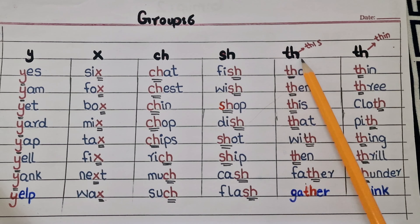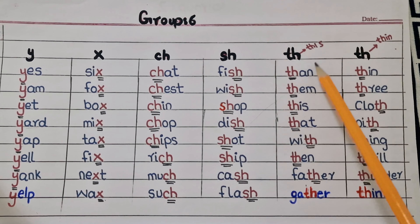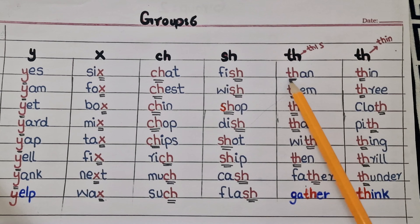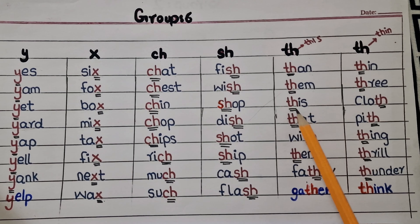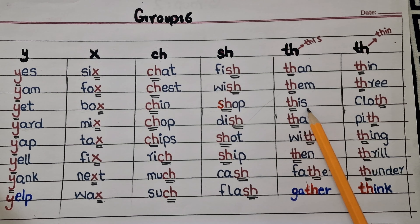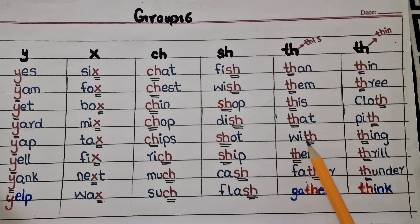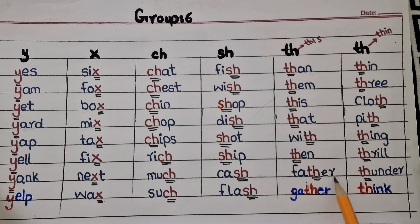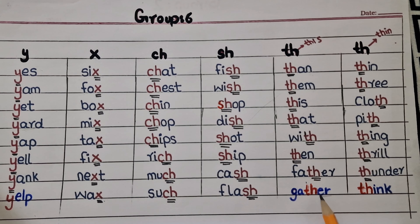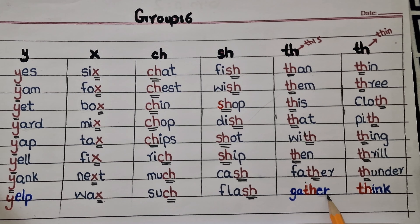As I told you, TH makes two sounds. First let's look at the voiced TH sound examples: TH-E-N — Then. TH-E-M — Them. TH-I-S — This. TH-A-T — That. W-I-TH — With. TH-E-N — Then. F-A-TH-E-R — Father. G-A-TH-E-R — Gather.